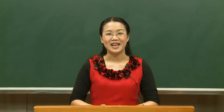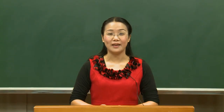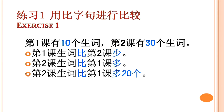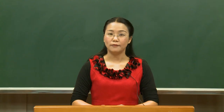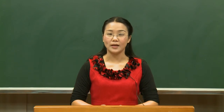高速列车的时速是一百公里。 Can you make 比字句 based on the given information? We can say: 第一课生词比第二课少; 第二课生词比第一课多; 第二课生词比第一课多二十个; 高速列车的时速比普通列车快; 高速列车比普通列车快二百五十公里。 If you are deliberately vague about the results of comparing A with B, you can use the phrases 得多、多了、一些、一点.